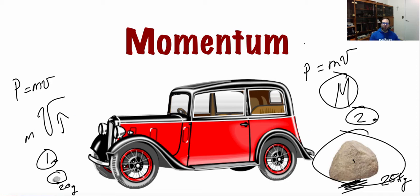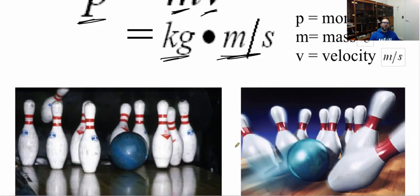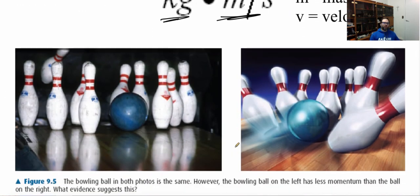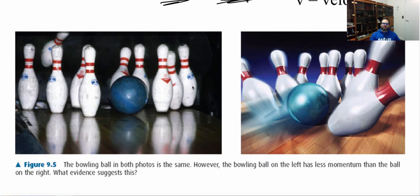So let's continue on here on what momentum does. So right here we have two pictures of bowling. In these two pictures, we're saying this is the identical bowling ball, the exact same bowling ball. So the mass of the bowling ball is the same. Now, according to this, on the left, this photo here, the bowling ball has less momentum than the bowling ball on the right.